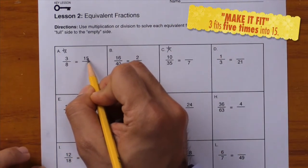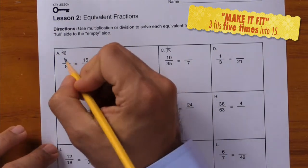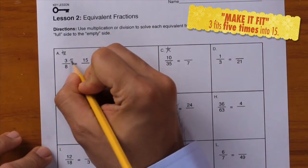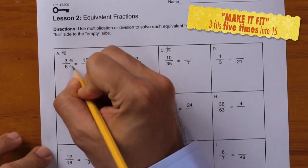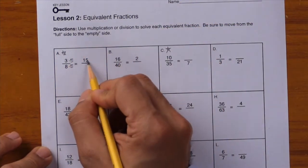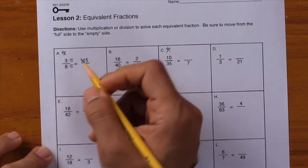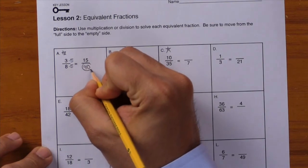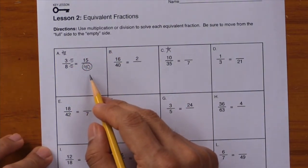We did that by multiplying by 5. I'll write times 5 in the numerator, and whatever you do in the numerator, do the same thing in the denominator. Write times 5. 3 times 5 equals 15. 8 times 5 equals 40. Write it down and circle it because that's our answer.